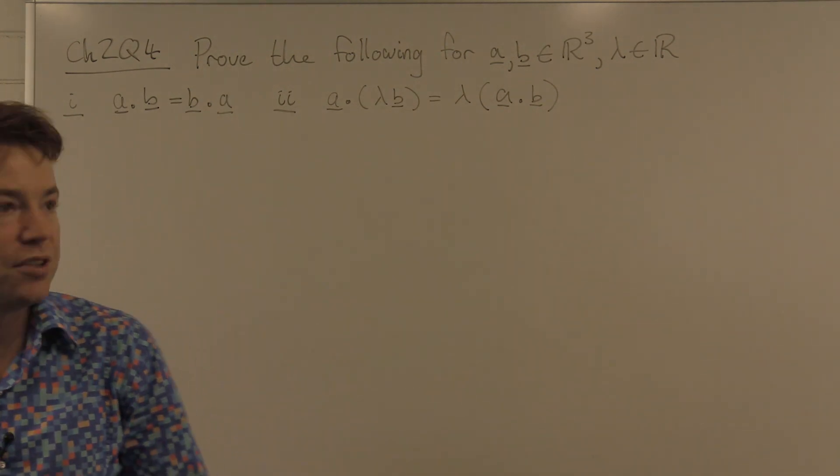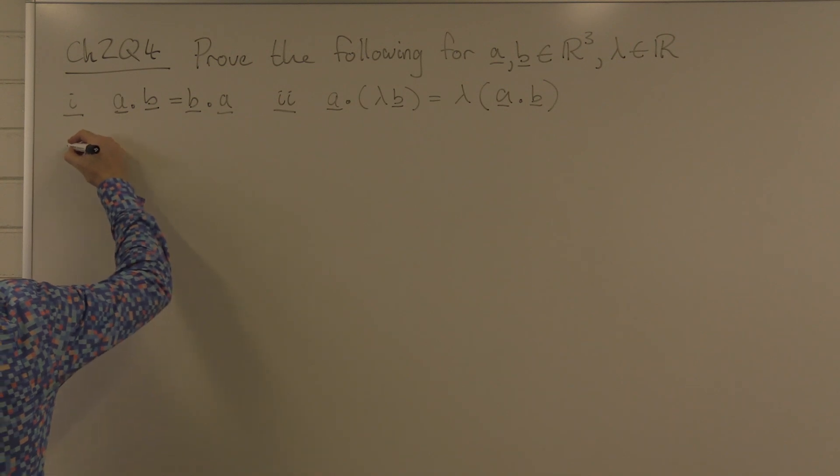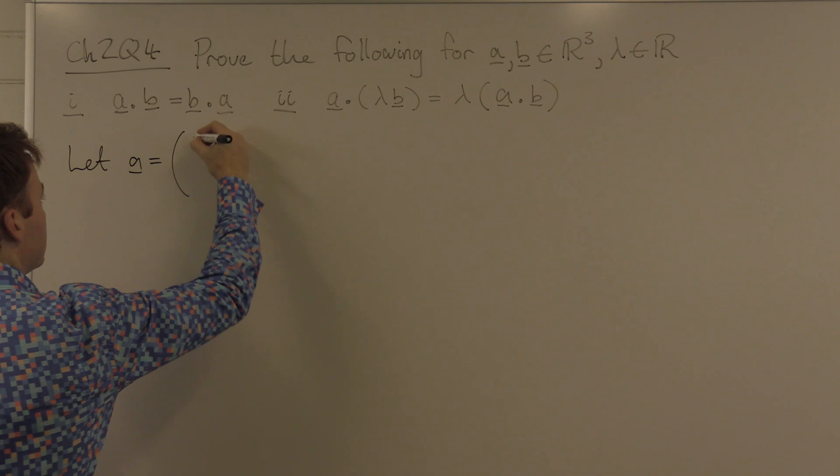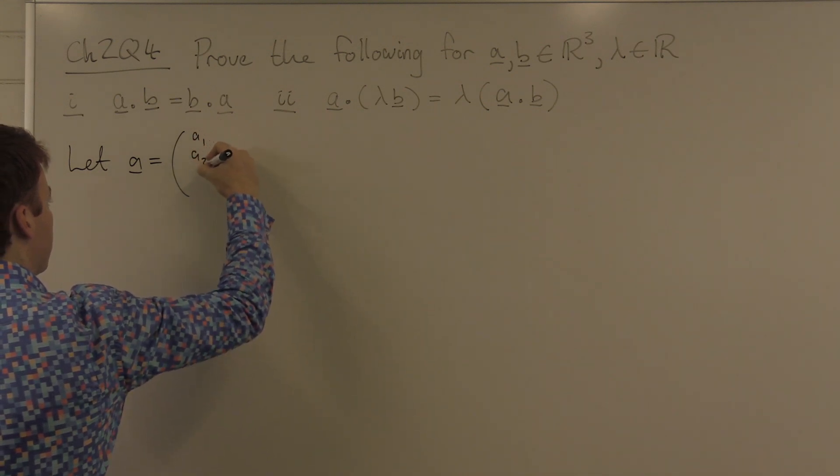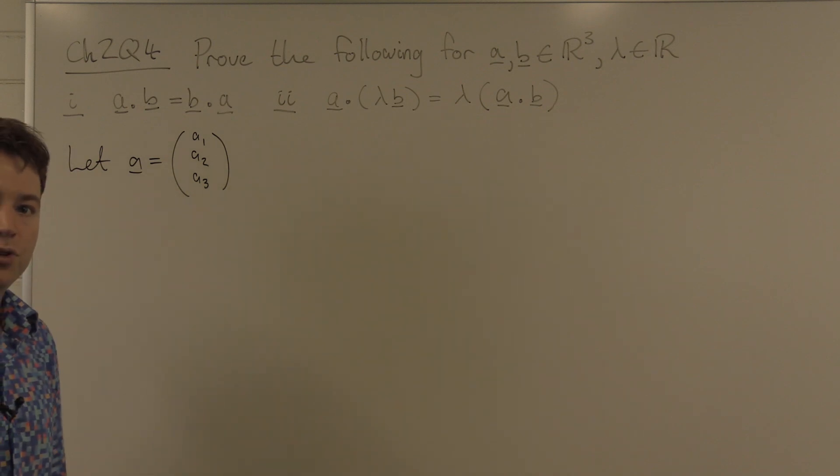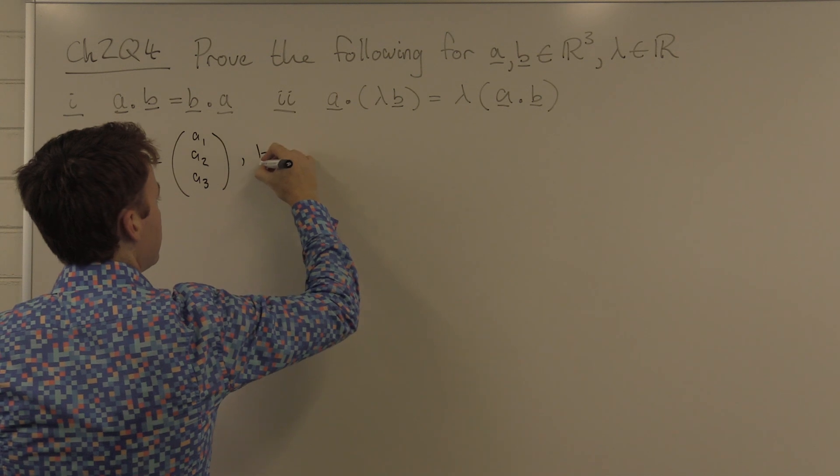Well, we are told that A and B are three-dimensional vectors over the real numbers, so let's start with that. A looks like this: a tuple of three things, A1, A2, and A3, and those three things are real numbers.